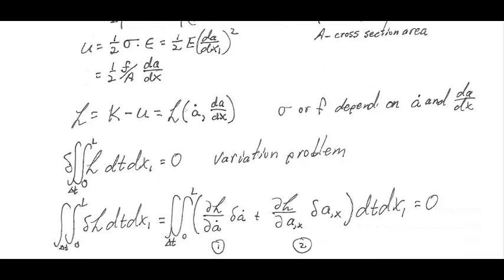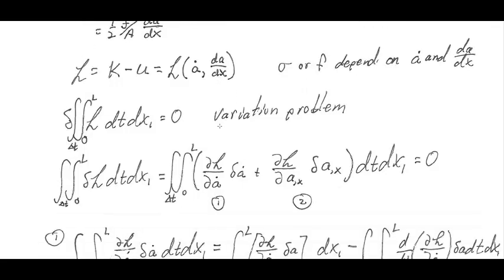So this becomes important. We can have changes in velocity, changes in strain. These are independent variables. So we can take variations in the velocity and, in addition, variations in the strain.